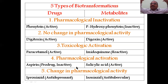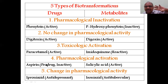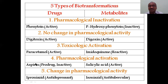The fourth type is pharmacological activation — an inactive drug becomes active. Aspirin is a wonderful example: it is actually a prodrug, inactive in nature. 'Pro' means before the drug. Due to biotransformation in the body, aspirin is converted into salicylic acid, which is active. So an inactive drug becomes active — this concept is called a prodrug.